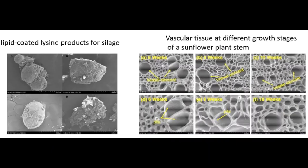These SEM micrographs are of biological samples. On the left is the lysine products for cattle feed showing surface structures. On the right you can see the SEM micrographs of the vascular tissue of a stem of a sunflower plant showing their growth stages.